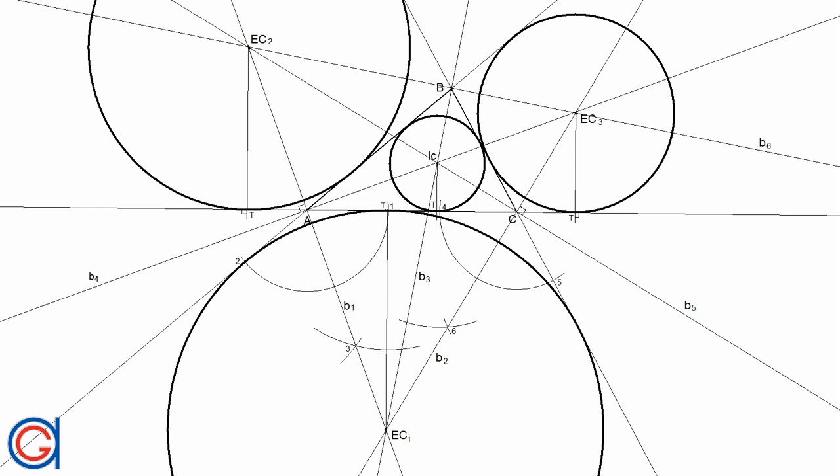The in-center is located at the intersection of the three external angular bisectors. The three x-centers are located at the intersection of the internal bisector and external bisector of the two other angles. Because the internal bisector of an angle is perpendicular to its external bisector, it follows that the in-center together with the three x-centers form an orthocentric system.